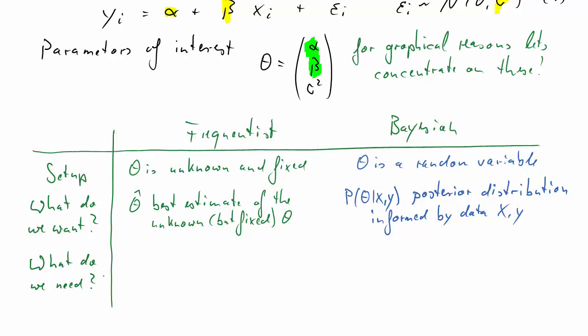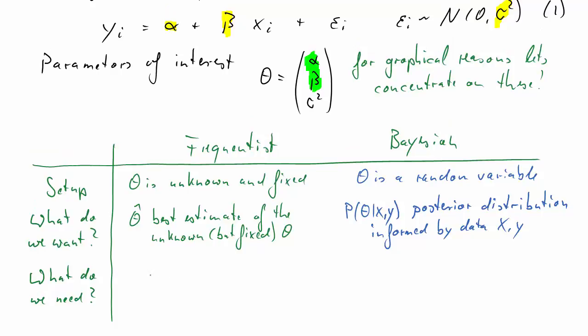What do we need? A frequentist needs basically our model here, which we labeled as model 1 above, our linear relationship and a distributional assumption for the error term. So we need the model and we need data X and Y.